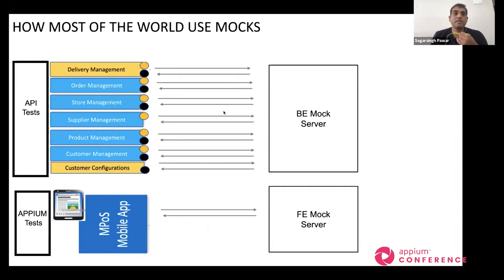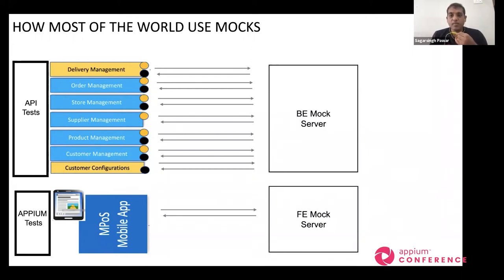When you bring up these known unknowns, everybody talks about mocking — we can use a fake server and it will solve our problem. Most commonly, teams use fake servers where they have API tests for each service communicating independently to a mock server, taking a response and checking behavior of each service. The same applies for front end. Backend and front end are kept as separate entities because we have an edge layer dealing with internal services, and those deal with external services, so the mock interfaces for each may differ.